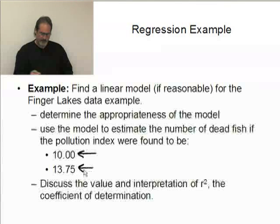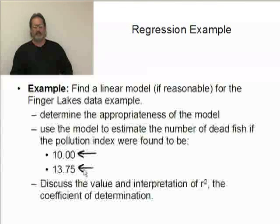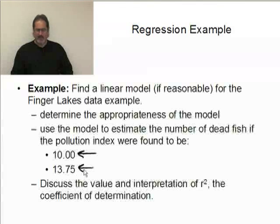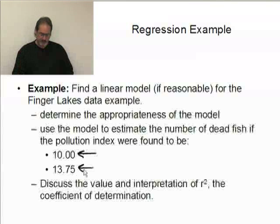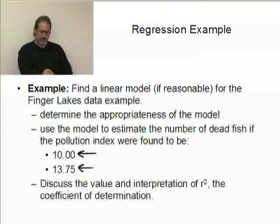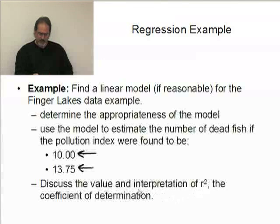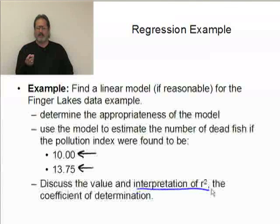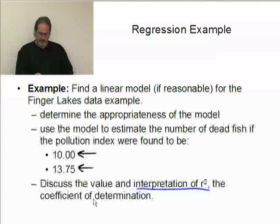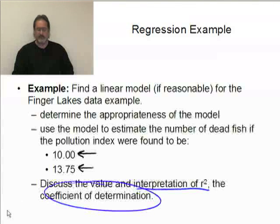We want to consider what happens at a pollution index of 13.75. That's really the strength of linear regression, typically used to predict one variable based on values of the other. We also want to talk a little bit about the interpretation of the value R squared. When we did correlation you saw the value of R, but right above it you saw R squared. What does that value actually mean? It's referred to as a coefficient of determination, but what does it actually mean in terms of the model?